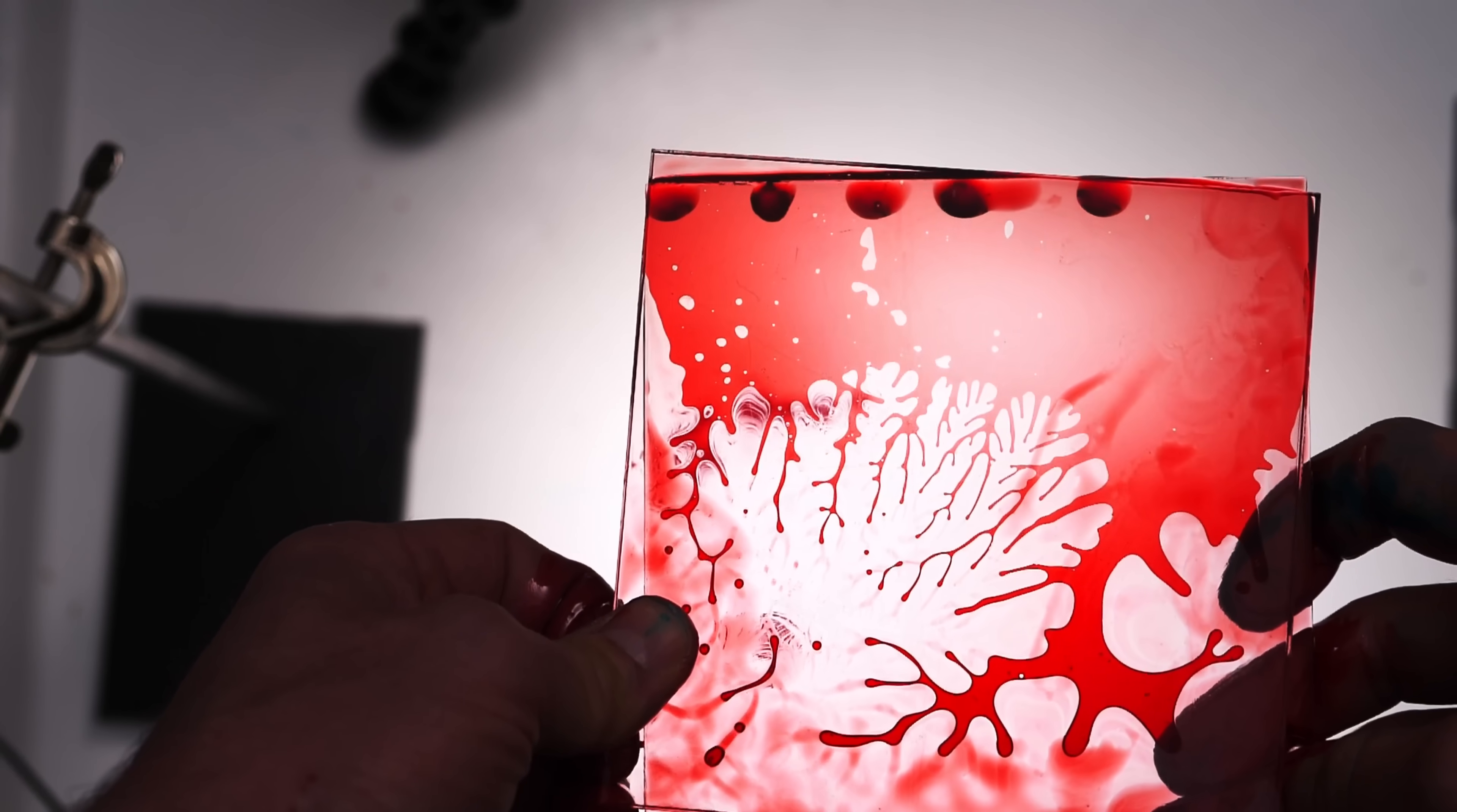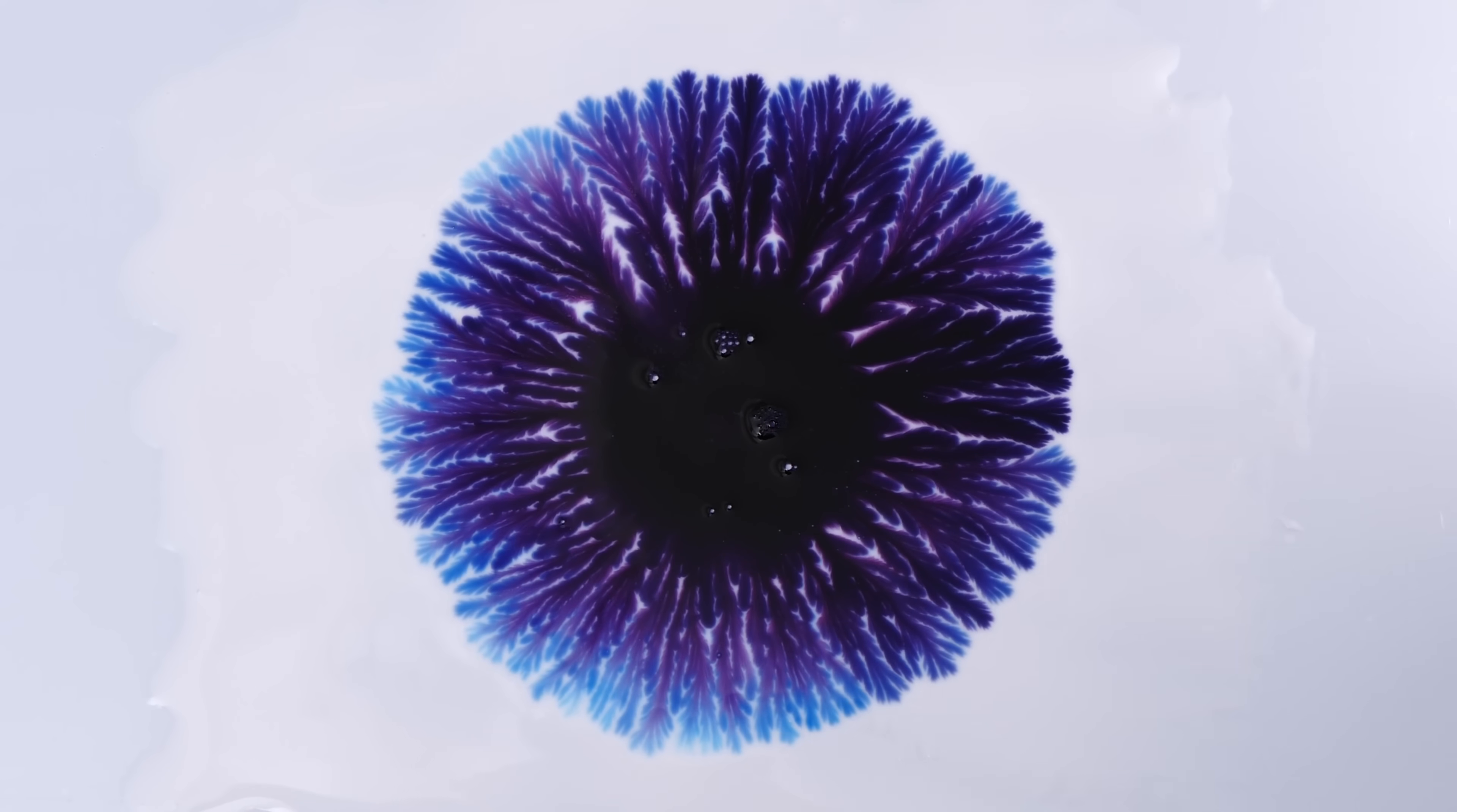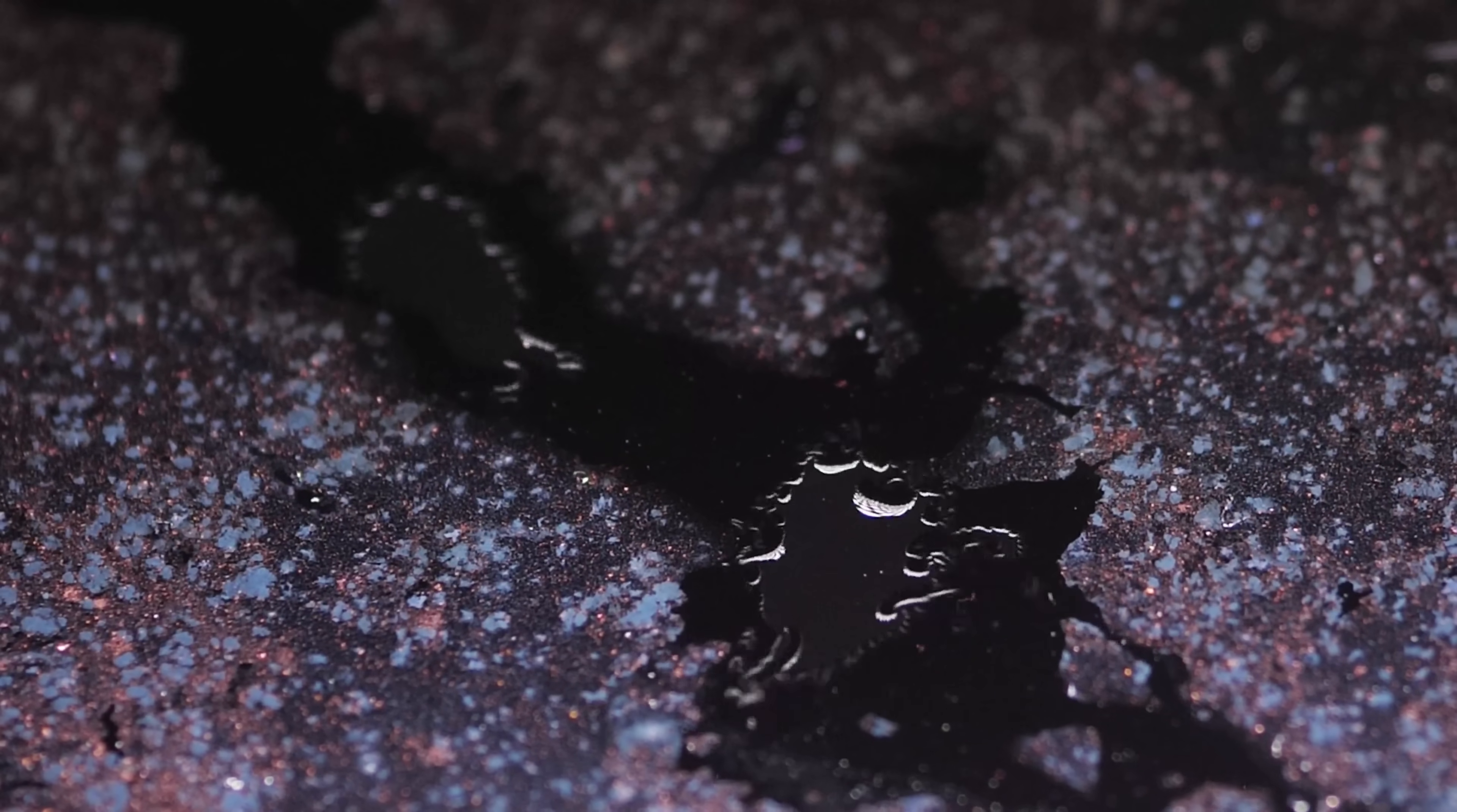You'll notice that the fingers here are much thinner than the fingers we were getting in the Hele-Shaw cell. That's because finger size is dictated by surface tension. Surface tension opposes the formation of fingers below a certain size, and so because the dish soap is lowering the surface tension in this example, we should expect to see thinner fingers.